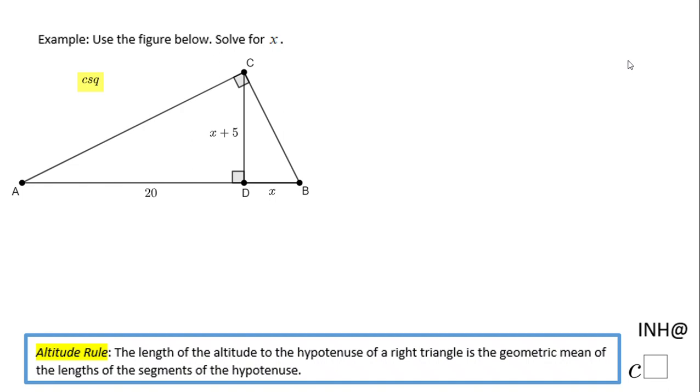Welcome or welcome back and I need help at C-squared. In this example we need to use the figure below and solve for x. We notice we have x plus 5 and x here, so we have x in two places. Also you notice here I have something called the altitude rule.